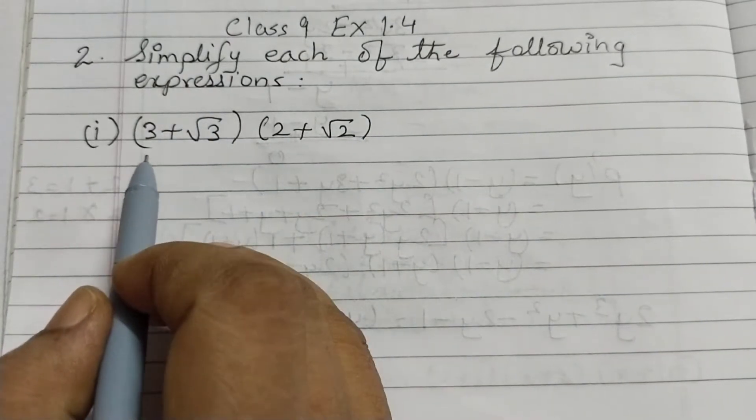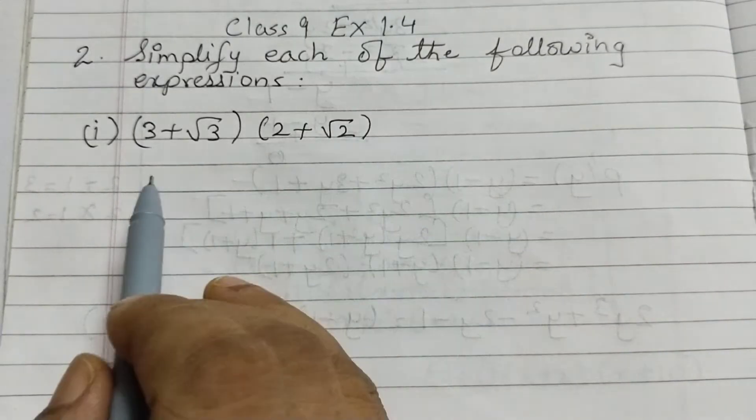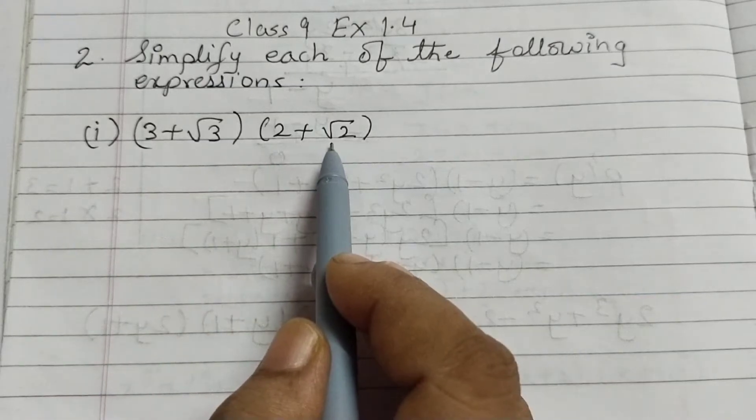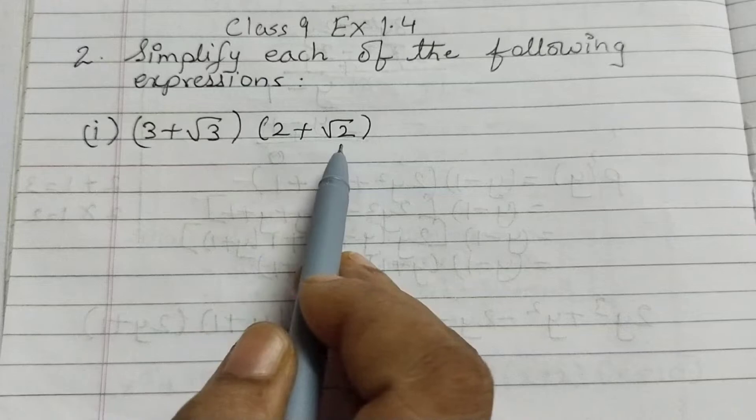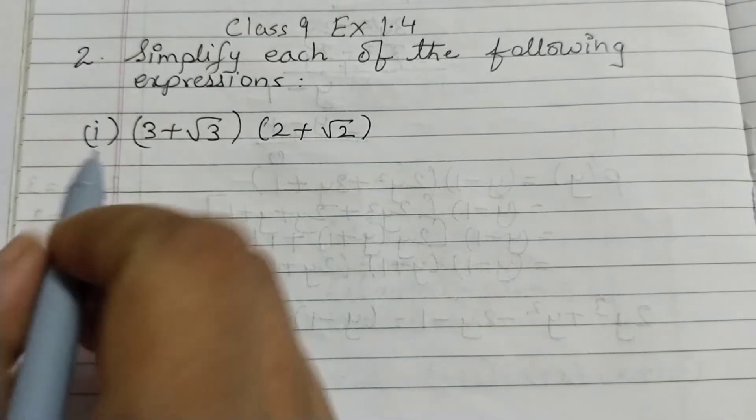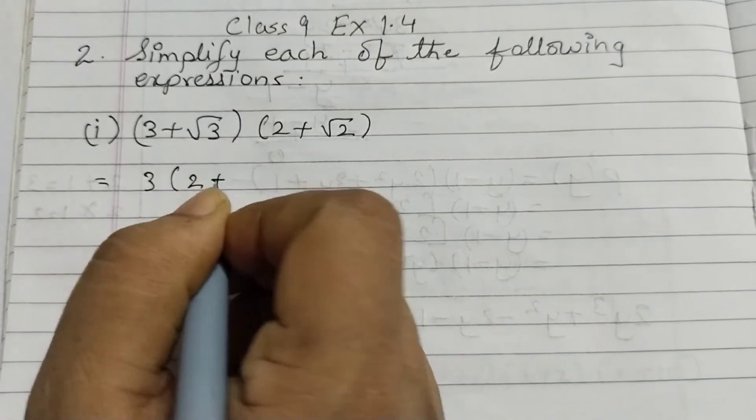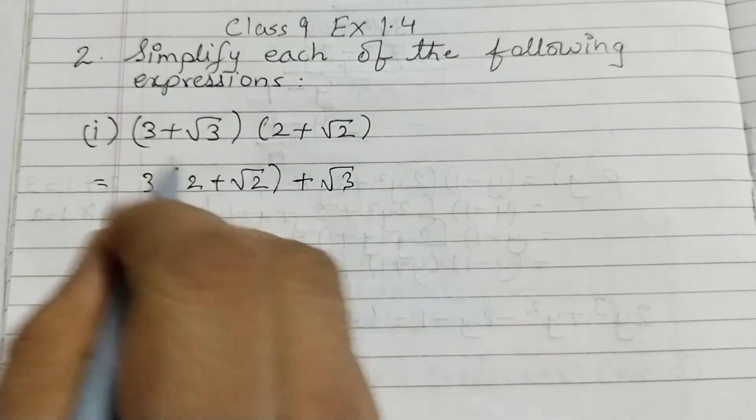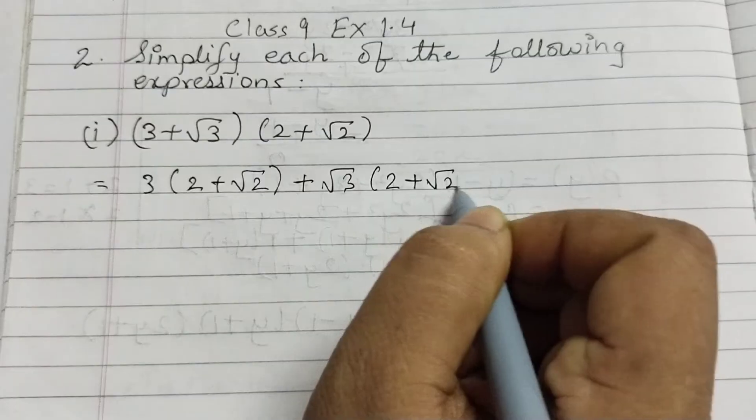First one, 3 plus root 3 multiplied by 2 plus root 2. Here we have all different numbers, 3, root 3, 2, root 2. So we cannot use any identity. First we will multiply 3 by this expression and then we will multiply root 3 by this expression. So equals to 3 multiplied by 2 plus root 2, plus root 3, 2 plus root 2.